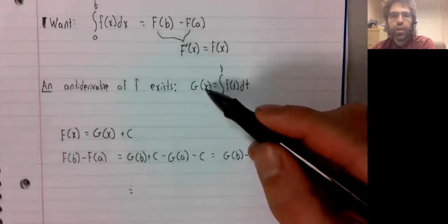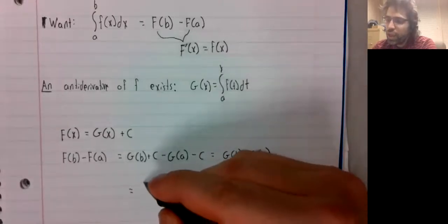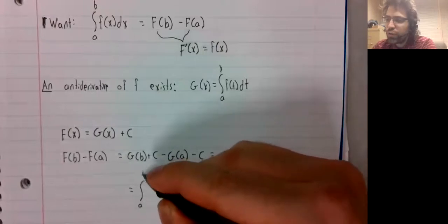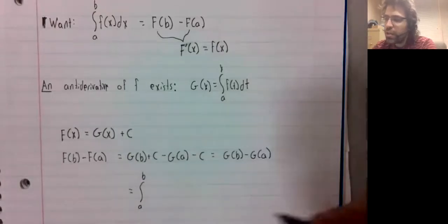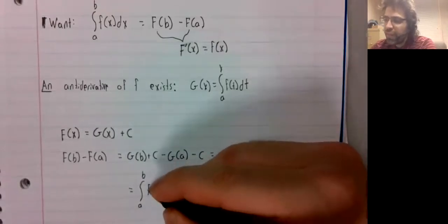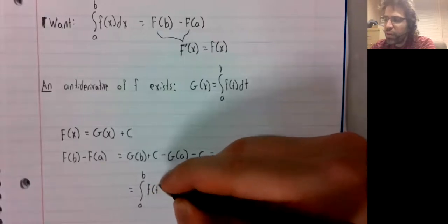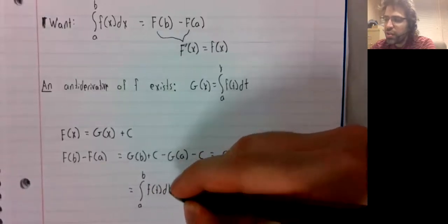Now we'll use our definition of g. g of B is the integral from A to B of f of t dt.